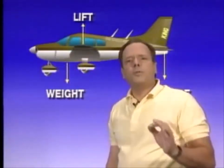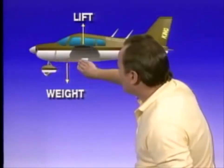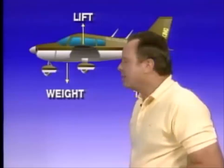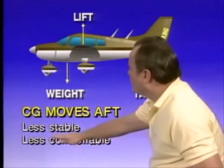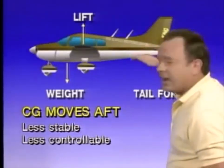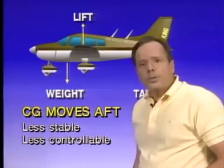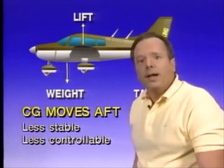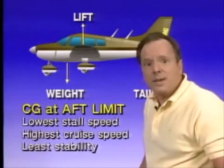What happens if you move the center of gravity further rearward? The plane becomes less stable because there's less down force on the tail, and as a result, less controllable. Compared with an airplane loaded with the CG at the forward limit, an airplane loaded with the CG at the aft limit will be less stable.